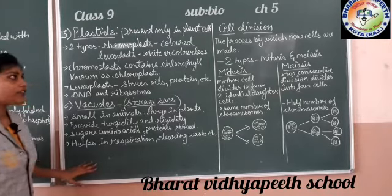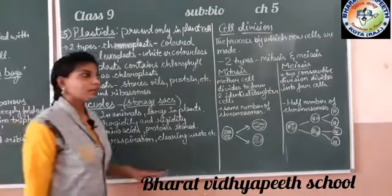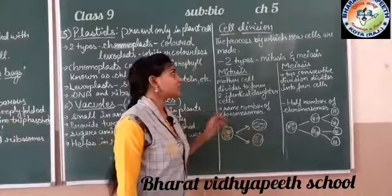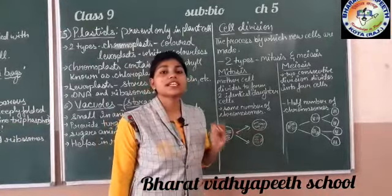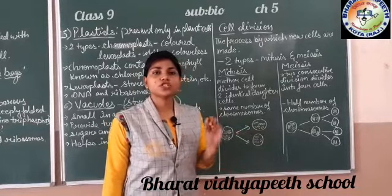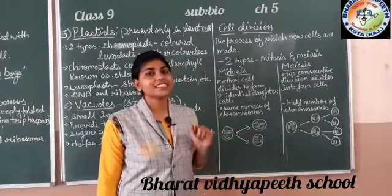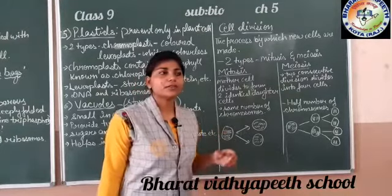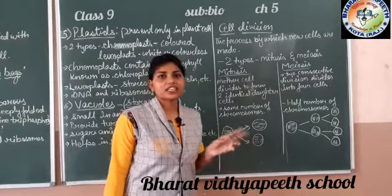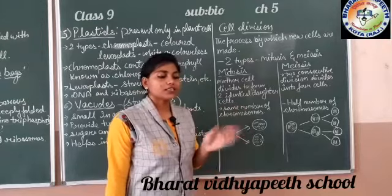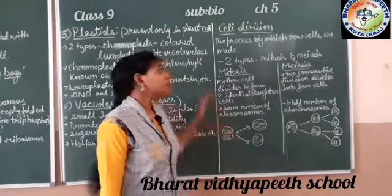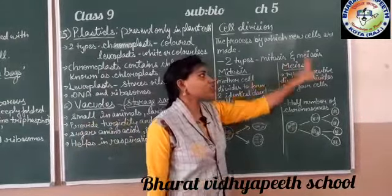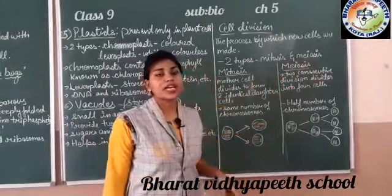After cell organelles, we are going to study cell division. Cell division is the process in which a new cell is formed. This formation of a cell is done by the parent cell, which divides into two, or new cells are developed from other cells. Cell division mainly consists of two types: mitosis and meiosis.